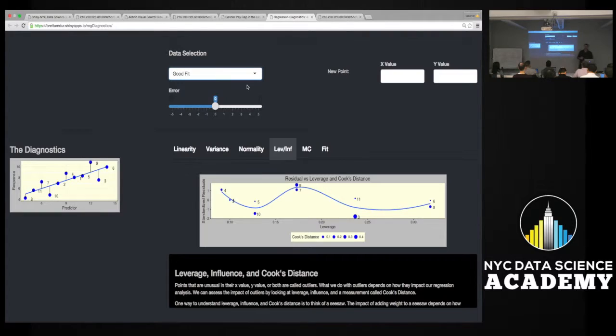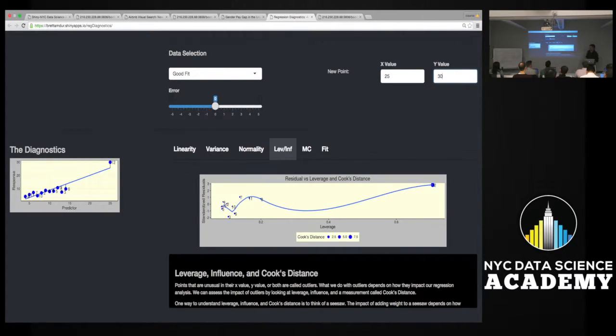This shows leverage and influence and Cook's distance. The tool lets you put in new points onto your graph. If I put in a new point at 25 and 30, huge leverage on the new point we made. It's all the way over here, meaning it's very far away from the mean x value. And big Cook's distance too, because that 7.5 value, if you remember how Cook's distance works, big numbers are scary. That's telling us we've got a problem here.